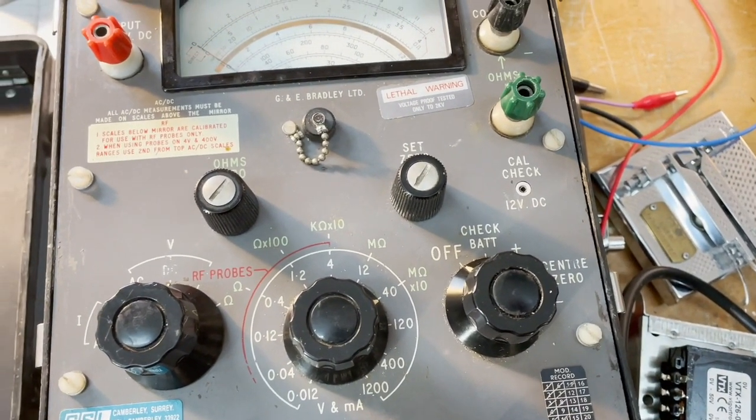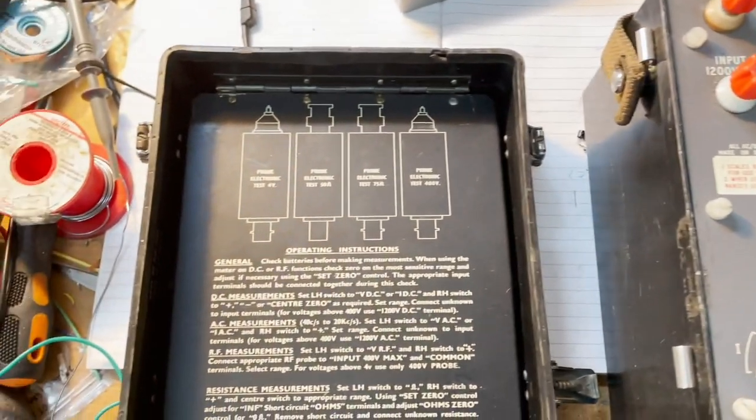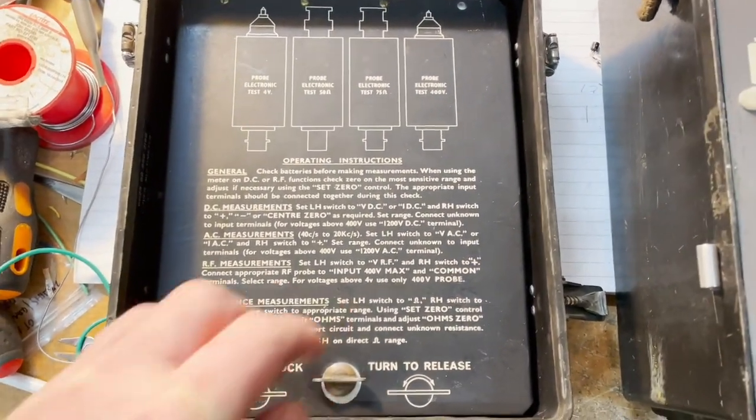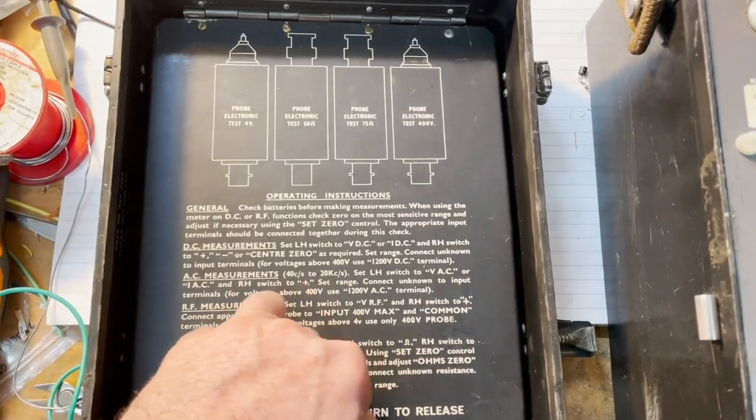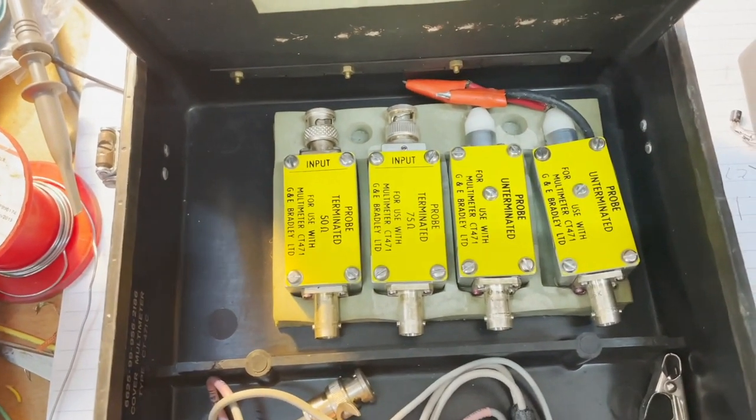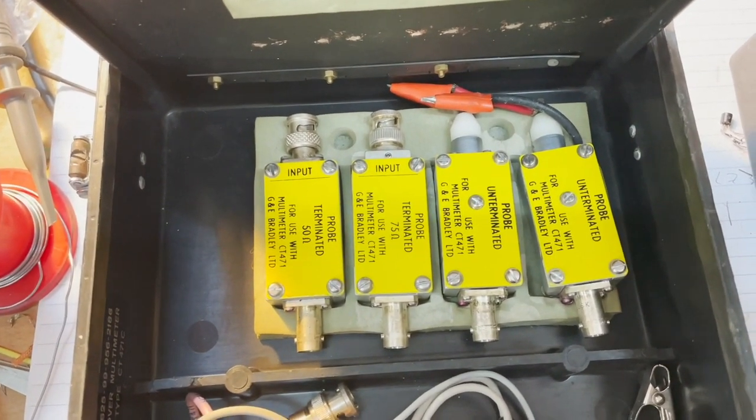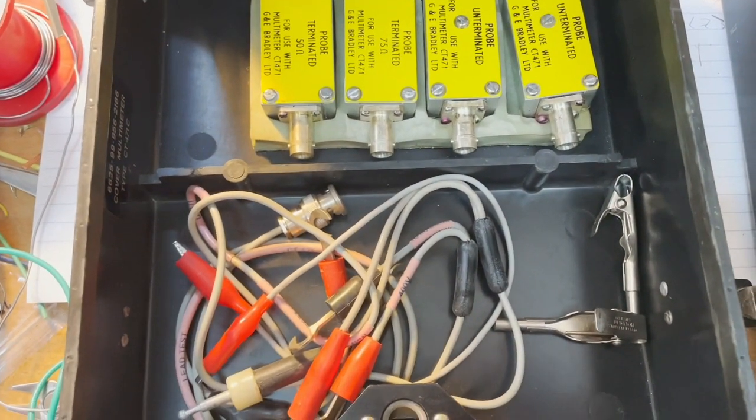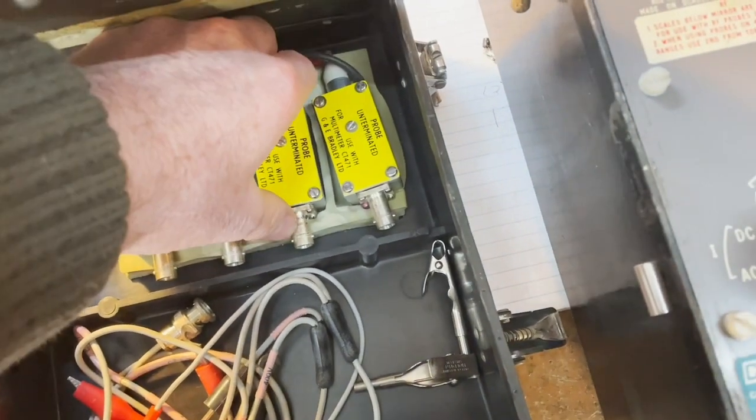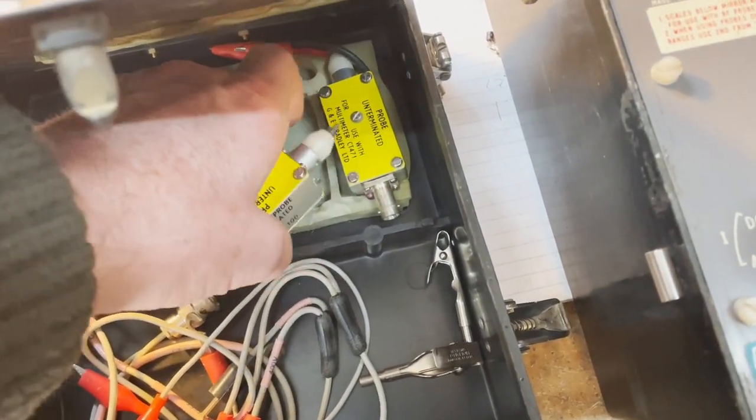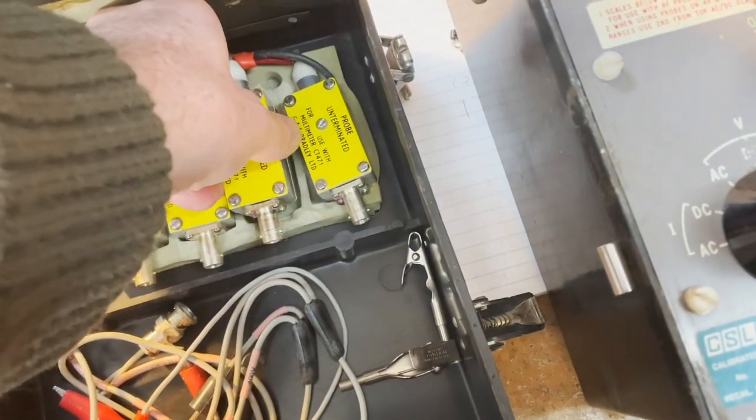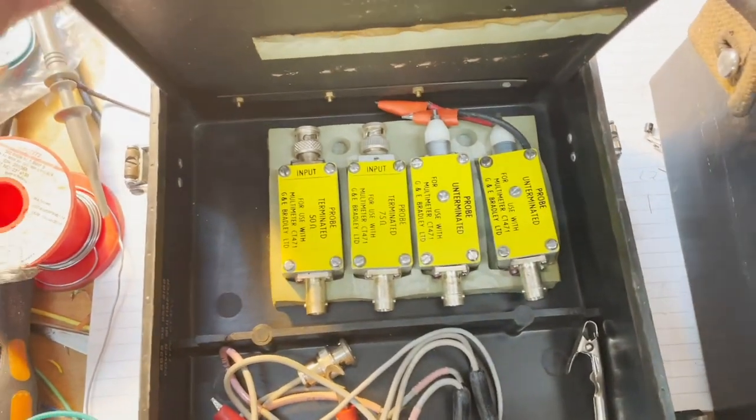Not a bad piece of kit. The lid of the multimeter is also quite good. We've got some nice goodies in here. These are the various RF probes, so this is really quite a high-end piece of test equipment. I mean I'm not sure exactly how much this would have cost brand new in 1960s money, but I suspect it was probably not cheap.